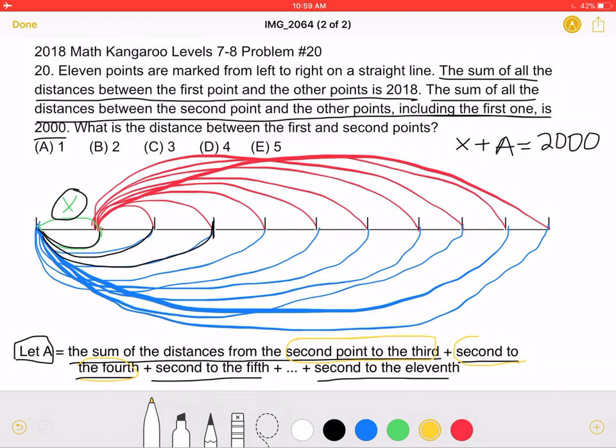And so on. As we can see, this sum is going to be A plus 10X, because each distance, we are adding an additional X, and we have a total of 10 distances. So 10X plus A must be equal to 2018.